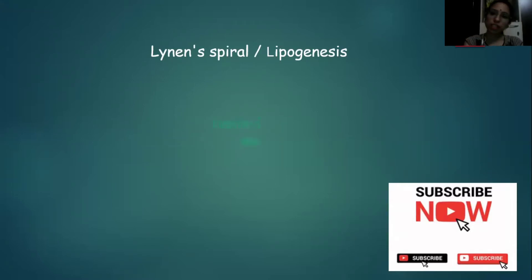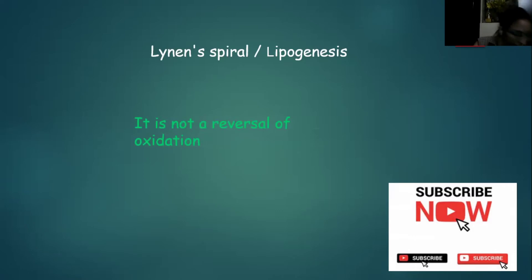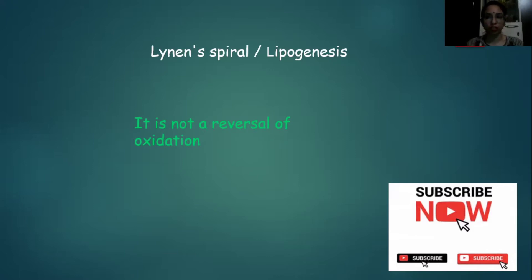We know what lipogenesis is — it is the biosynthesis of lipids. But it is not the reverse of beta-oxidation, unlike what we discussed in carbohydrate metabolism where glycogenesis and glycogenolysis are opposite to each other. In lipogenesis and oxidation of fatty acids, they are not simply opposite to each other. We will know the differences, but they are not strictly opposites.